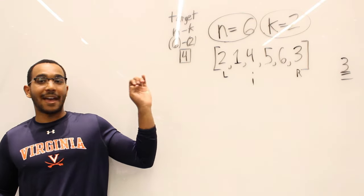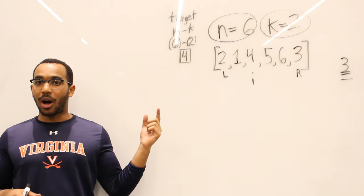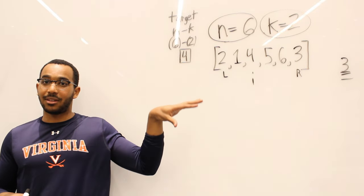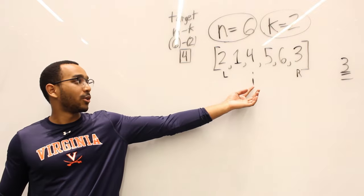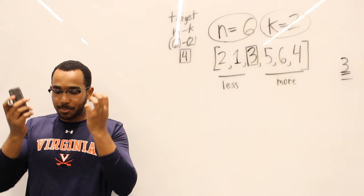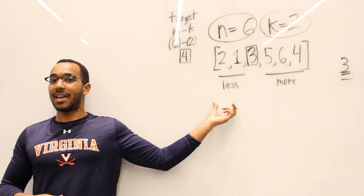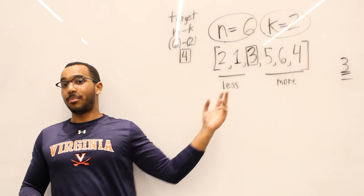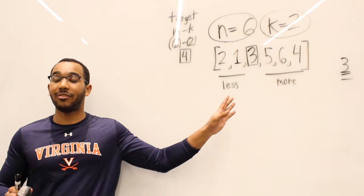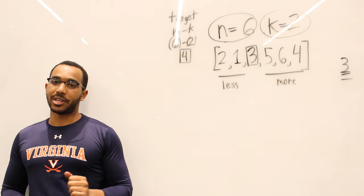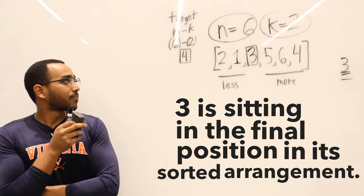I kept the tail. What we swap into the tail of items less than the pivot is the right boundary — where we kept the pivot safe. We swap the four and the three, and watch what happens. These are less than the pivot, and these items are more than the pivot by default. We sandwich the pivot item between these two sections. Three is now sitting in its final position in its sorted arrangement — if this were sorted: one, two, three, four, five, six. Three is boxed in its final position.